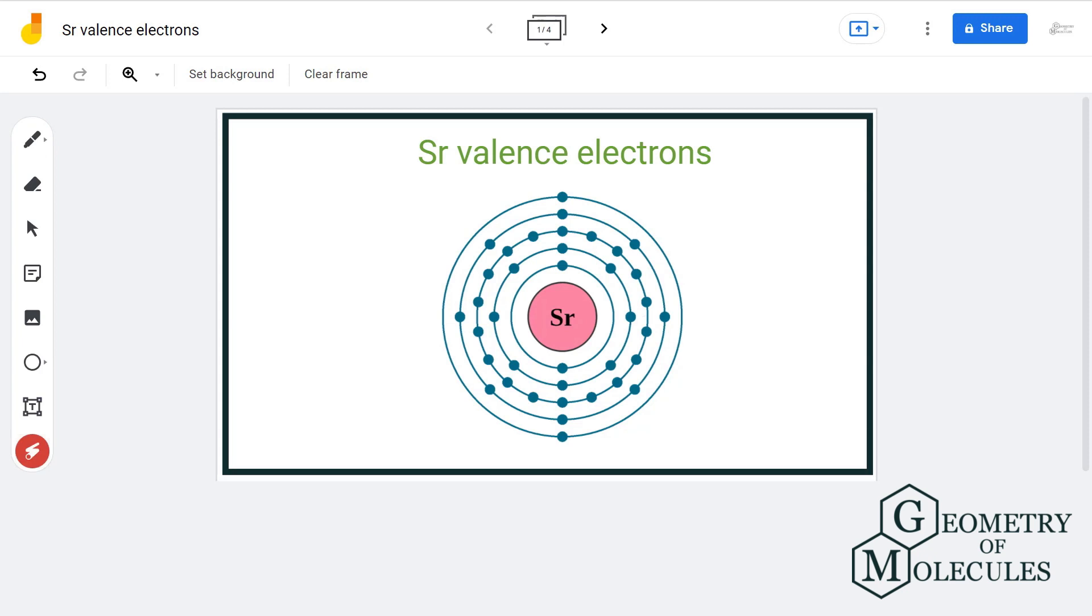Hello guys, welcome back to our channel. In this video we will look at two ways of determining the valence electrons of strontium. Valence electrons are those electrons that are present in the outermost shell of an atom. They are important because they give an insight into chemical properties of any element. Now strontium has two valence electrons as seen in this diagram here.